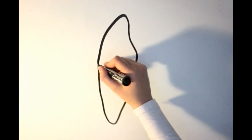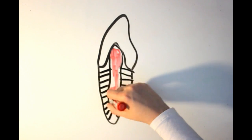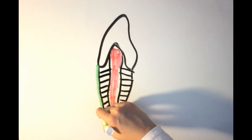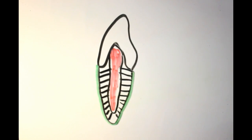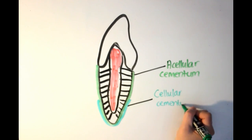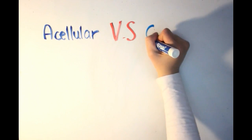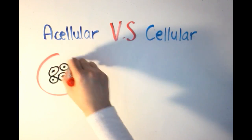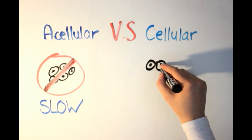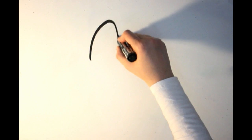So what's the difference between cellular and acellular cementum? Acellular cementum, also known as primary cementum, makes up the first layer of cementum which is deposited at the cementum-dentin junction. On the other hand, cellular cementum, also known as secondary cementum, makes up the last layers of cementum deposited on the primary cementum and it's mainly found on the apical third of the root. As the name suggests, acellular cementum contains no cementocytes and is formed at a slow rate, while cellular cementum contains cementocytes and forms at a faster rate.